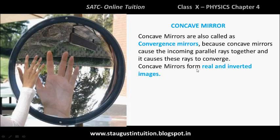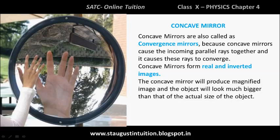The concave mirror forms real and inverted images. It will produce magnified images, meaning the object will look much bigger than its actual size. Concave mirrors are therefore known as convergence mirrors and are used when a larger image is needed.